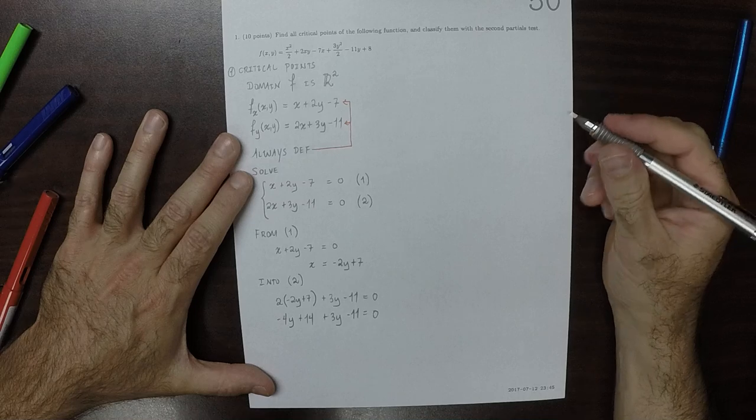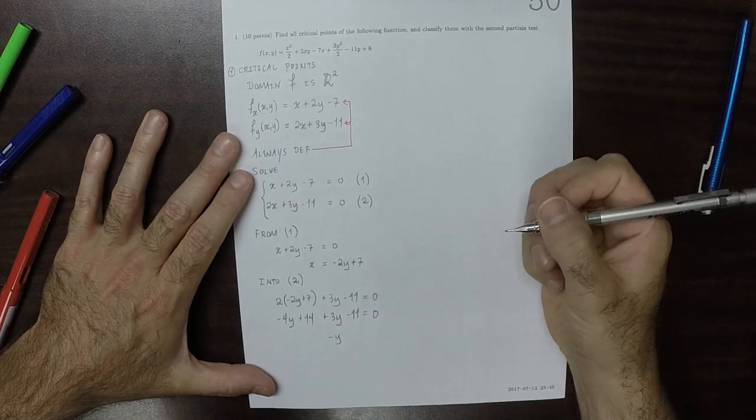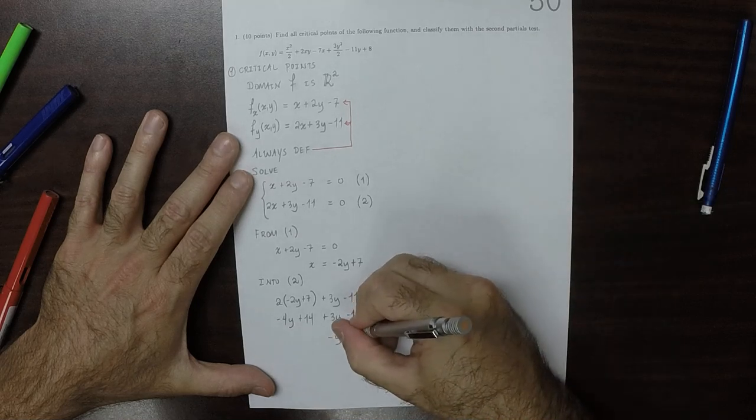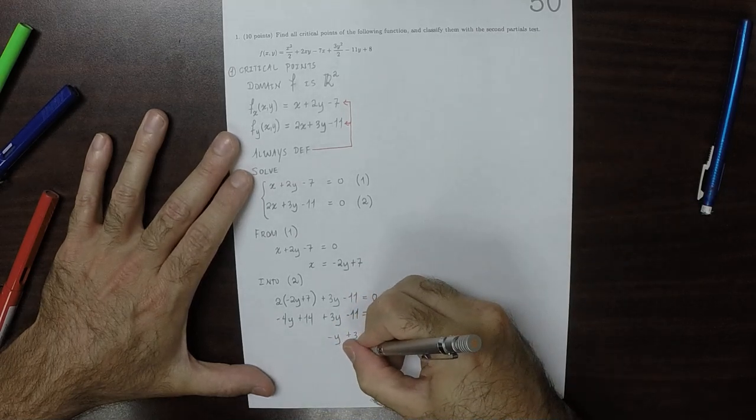Now I'll combine terms. That'd be negative y and then plus 3 is 0. So y is 3.